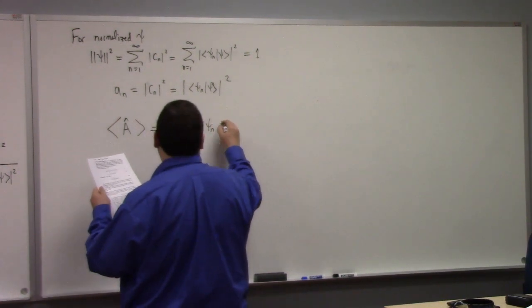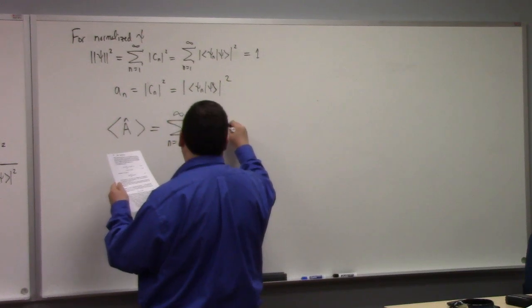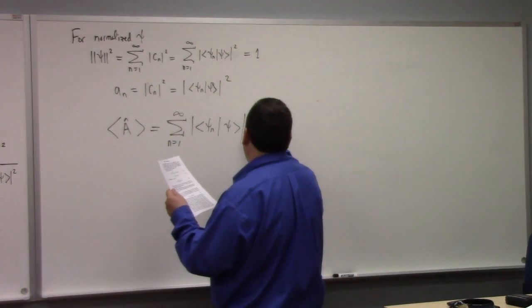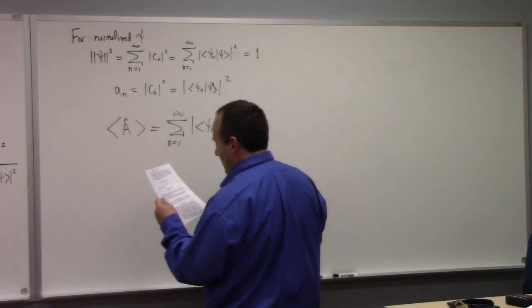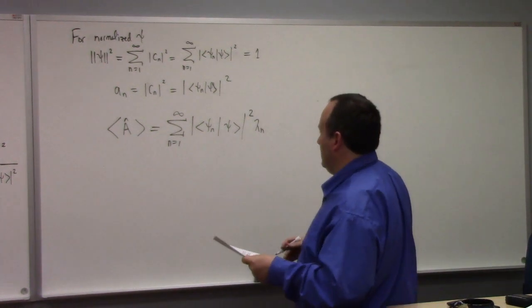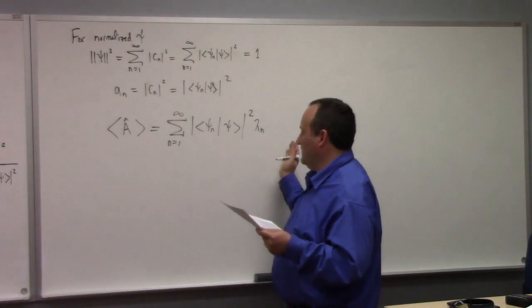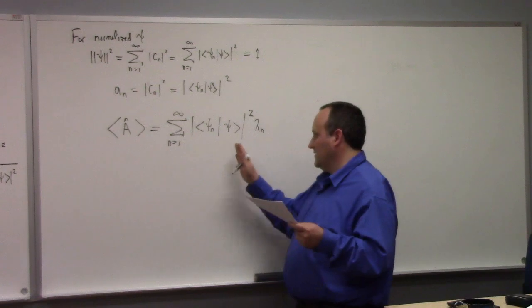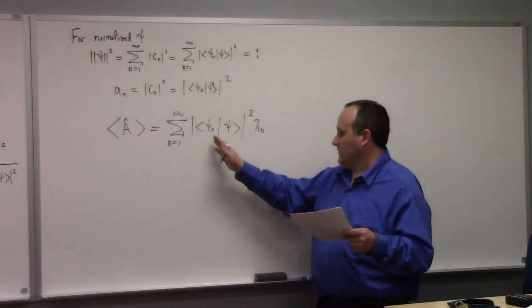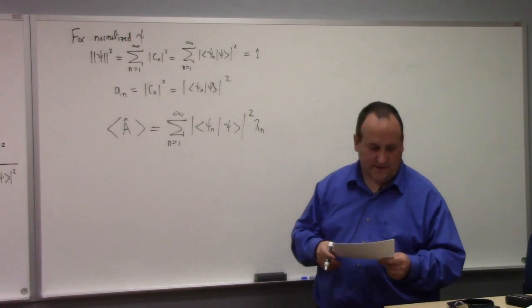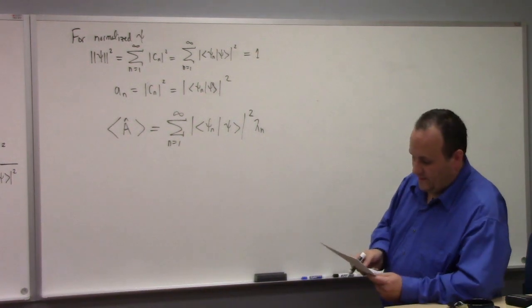Like, this is how we calculate the expectation value, right, you calculate these things against the eigenvalues. That's the observed, the average, it's like a weighted average of eigenvalues where the weights are taken according to the brackets of the eigenfunctions with the state that your experiments prepared in.